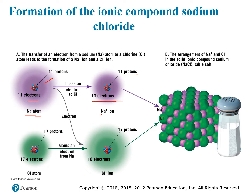Sodium loses that one electron so its outer shell is complete with eight electrons, but then it has more protons than electrons, making it a positively charged sodium ion. Chlorine, in column seven, has seven electrons in its outer shell and just needs one more to fulfill the octet rule. The electron from sodium jumps to chlorine, giving chlorine 18 electrons versus 17 protons — a negatively charged ion. Opposites attract, they form a chemical bond: salt, also known as halite, with a cubic lattice structure.